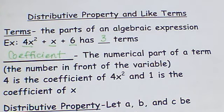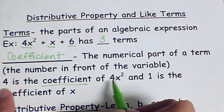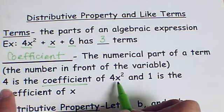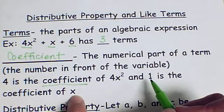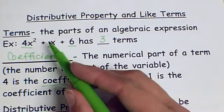So in the example we just looked at, 4 is the coefficient of 4x² because 4 is the number in front of the variable. And 1 is the coefficient of x because there is no number in front of x so it's understood to be one.